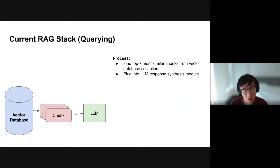Now that we have the query engine, we can start asking questions. We have both Lyft and Uber doc chunks in there. We can ask: what are some of the risk factors for Uber? We set top K equal to four, retrieving the top four chunks. We get back a response: risk factors include violent, inappropriate, dangerous activity, and similar things. You can actually go in and look at sources — you can see there are four source nodes, showing where the answer comes from in the document.